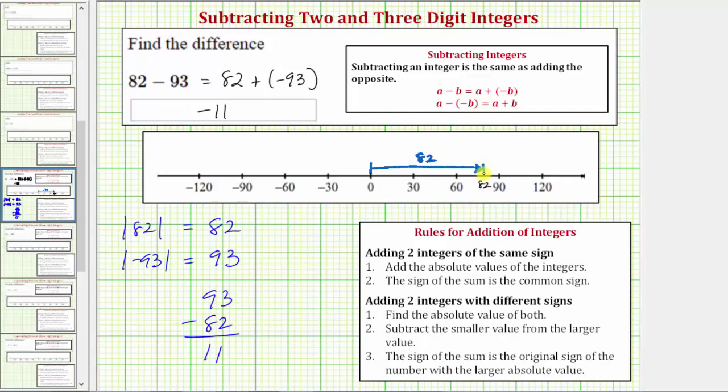And now from here, because we're adding negative 93, we need to move left 93 units. So starting here at positive 82, notice how if we move left 82 units, we'd be back at zero. We want to move 93 units to the left. So we need to go 11 more units to the left to negative 11.